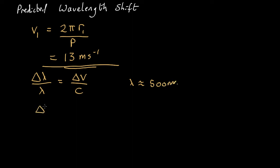This gives us that the wavelength shift is equal to the velocity, so 13 meters per second divided by 3×10⁸ times the wavelength, say 500 nanometers, which comes out as 2.2×10⁻⁵ nanometers.